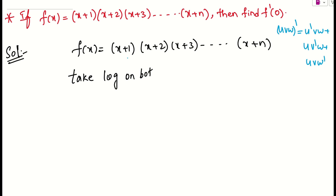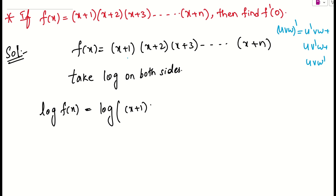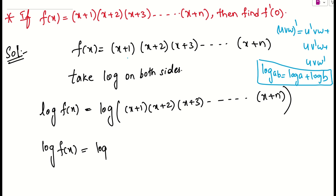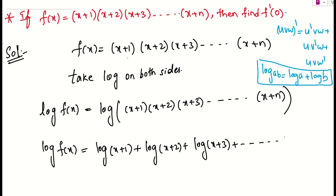Whenever you have a product of terms, I suggest you simply take log on both sides. If I apply log on both sides, I get log of f(x) on the left side. On the right side, using the formula log(ab) = log a + log b, this becomes log(x+1) + log(x+2) + log(x+3) and so on up to log(x+n).